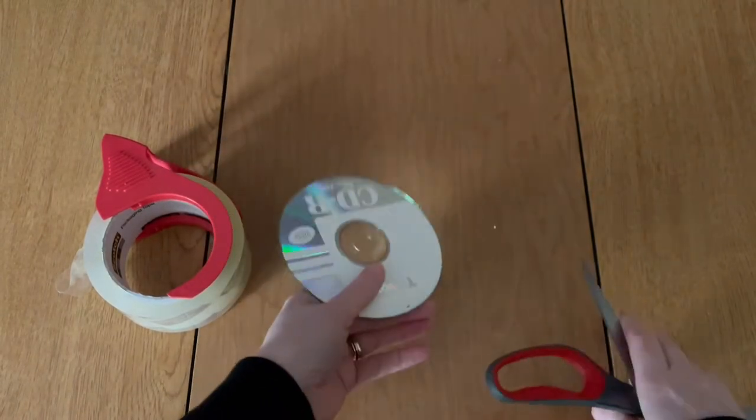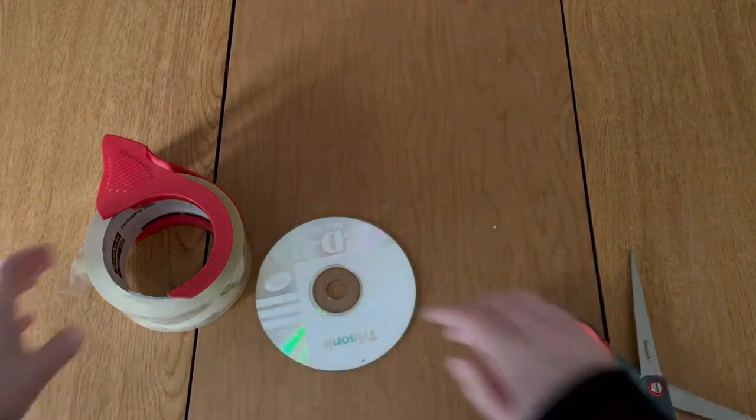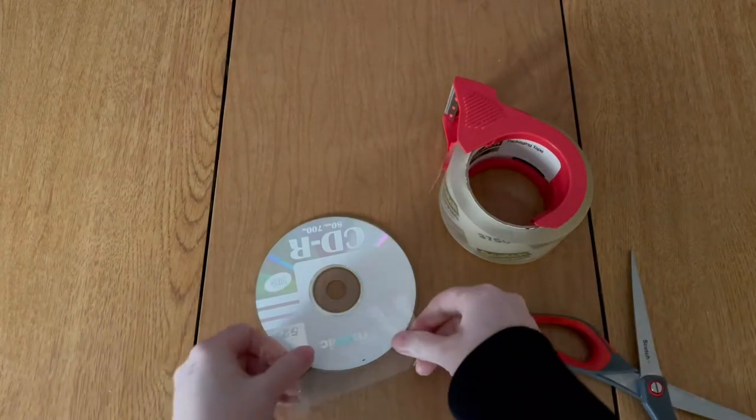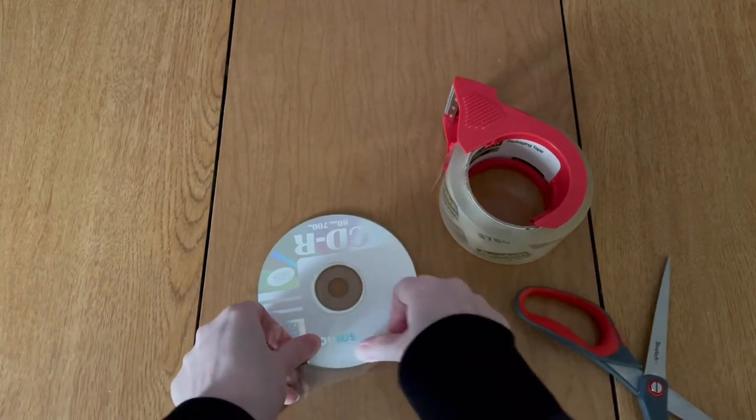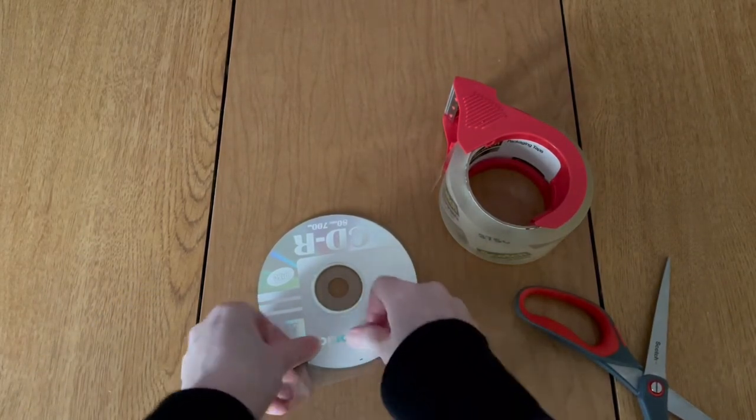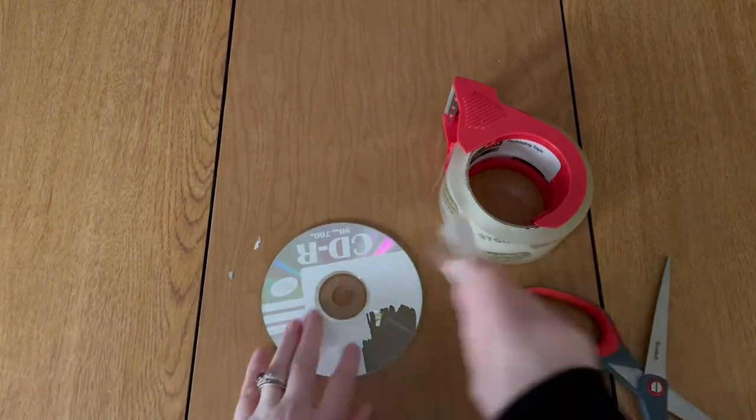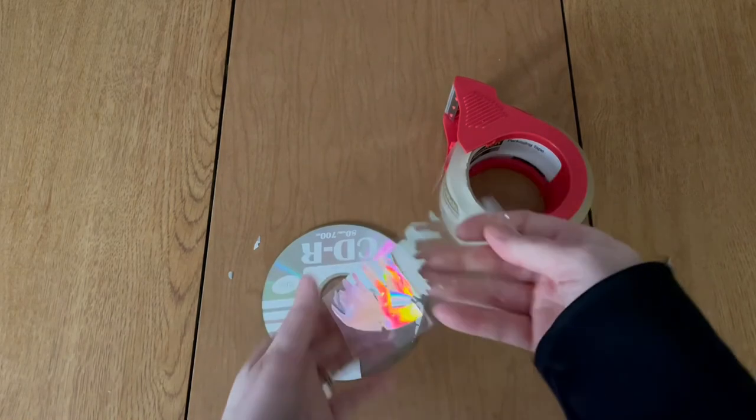And then what you're gonna do is take your packing tape, and wherever you made your little cut, you're just gonna press it down and peel it off. You'll see it'll come off. So what we're gonna do is keep using tape until we get all of the coating off.